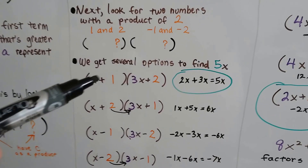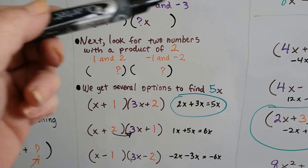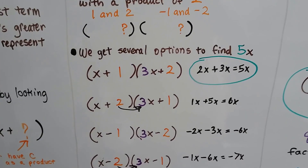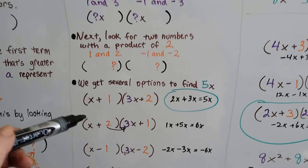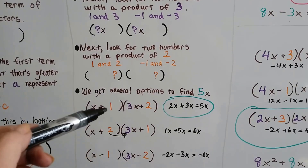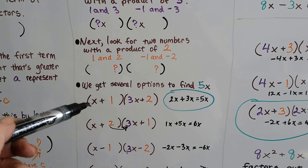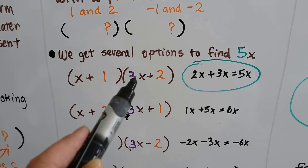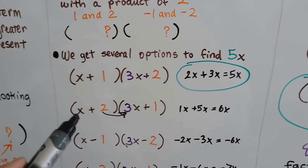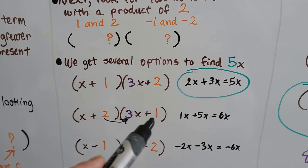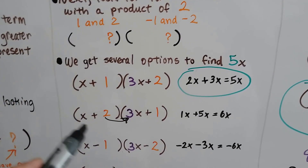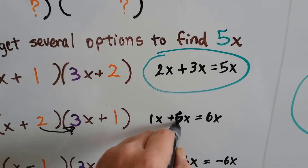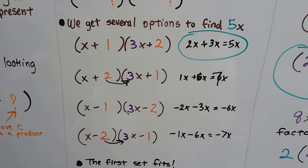We could do (x + 1)(3x + 2), since we have 1 and 3, and 1 and 2 as options. We start putting them into parentheses in different ways. Using positive 1 and 2 as the back end and positive 1 and 3 as the front, the outside-inside FOIL gives us 2x plus 3x, which equals 5x. If we flip it and try positive 2 and positive 1, we get 1x plus 6x, which gives us 7x — so that's not it.